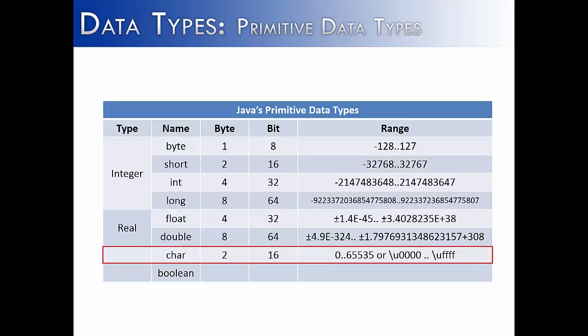The character data type is one of Java's eight primitive data types and it has a range of 0 to 65,535 symbols or from 0 to 4 F's if you're using hexadecimal. There is a considerable range of symbols that can be used within Java.